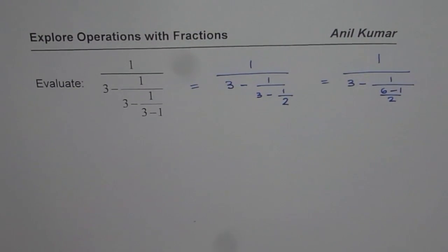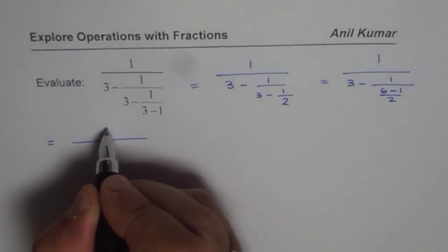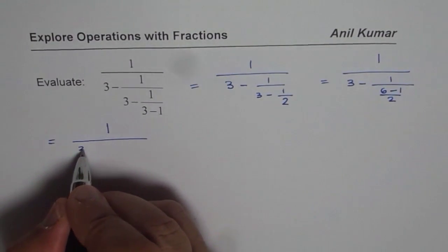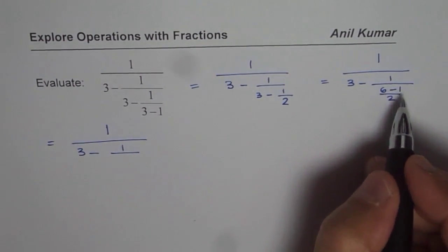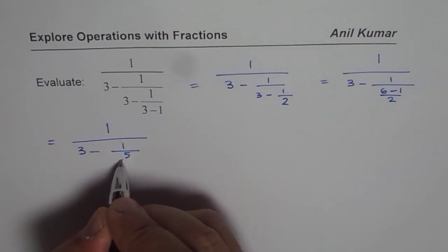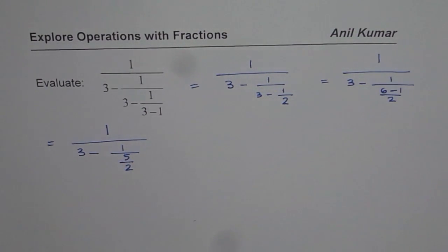6 minus 1 over 2. Let us rewrite this particular fraction. So we have 1 over 3 minus 1 over 6 minus 1 is 5, so we get 5 over 2. So that is what we have: 1 over 5 over 2.